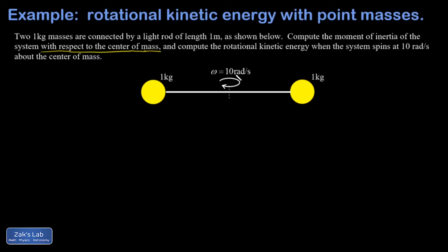And I want to find the moment of inertia and the total kinetic energy. So I need the distance to the rotation axis for each of these, and that's 50 centimeters or 0.5 meters. My moment of inertia is the sum of all the masses times their distance to the rotation axis squared. And that's going to be one kilogram at half a meter squared plus another one kilogram at half a meter squared.